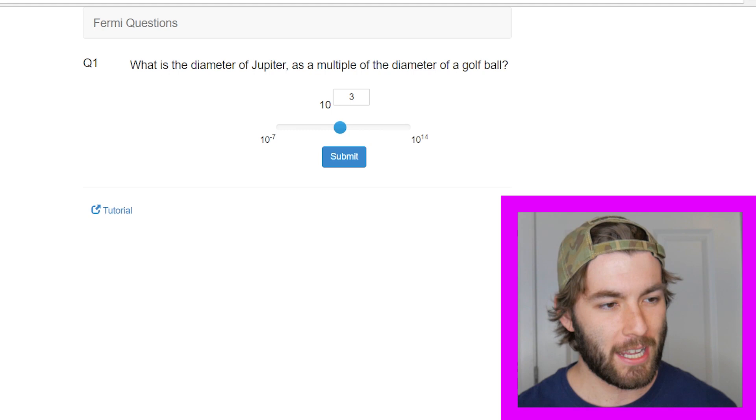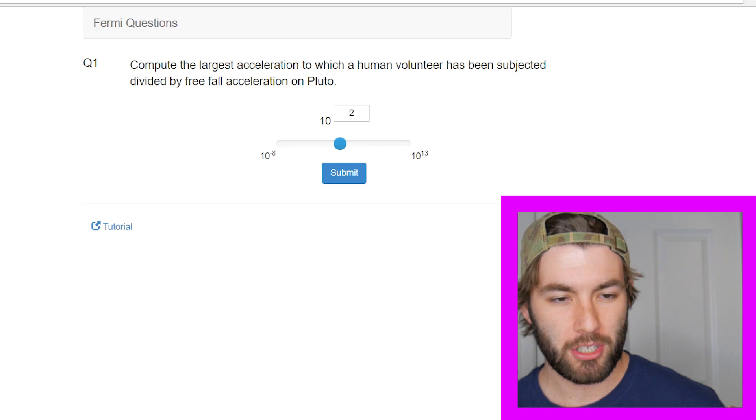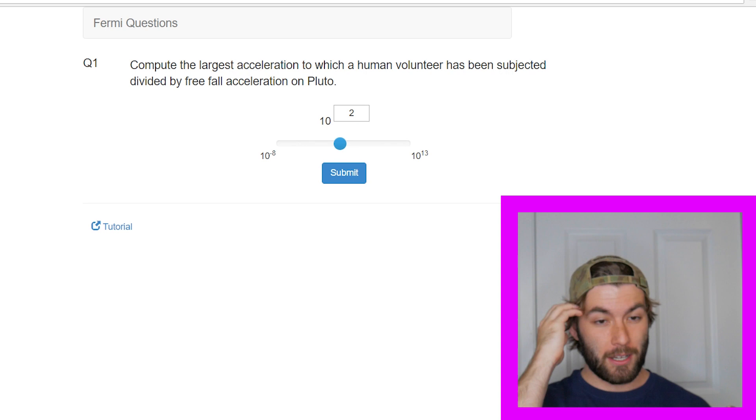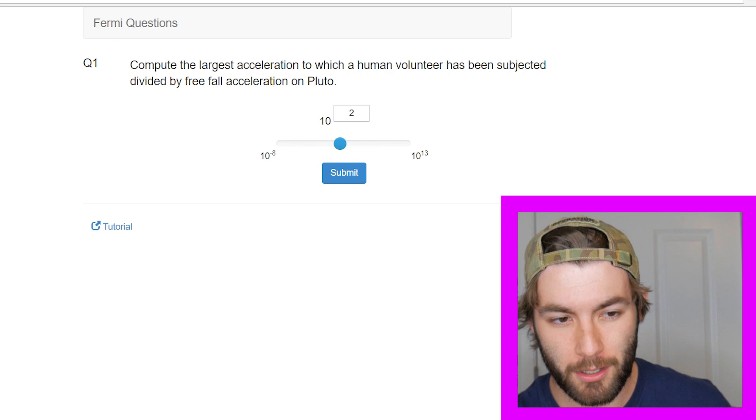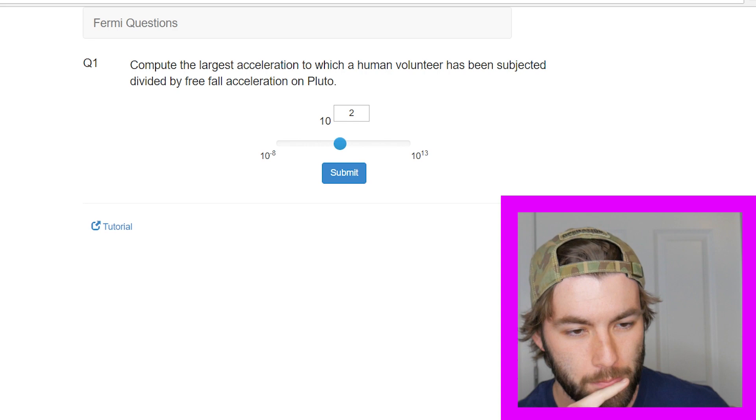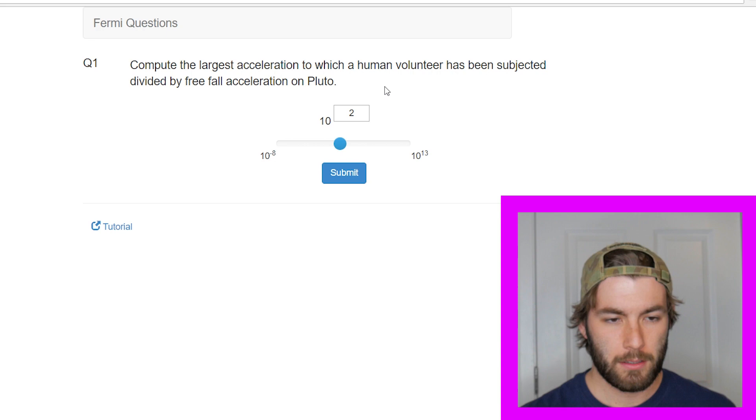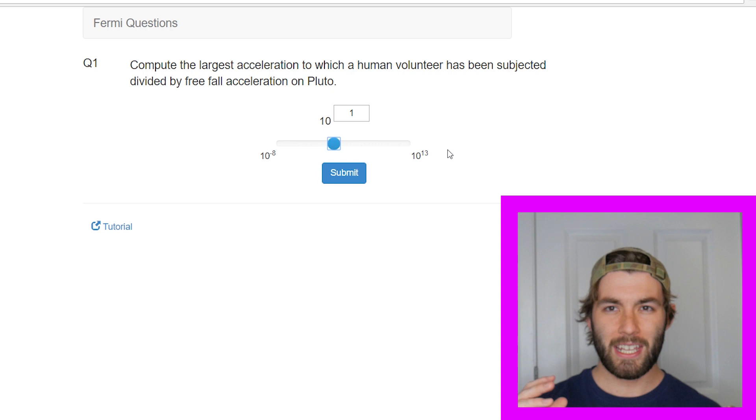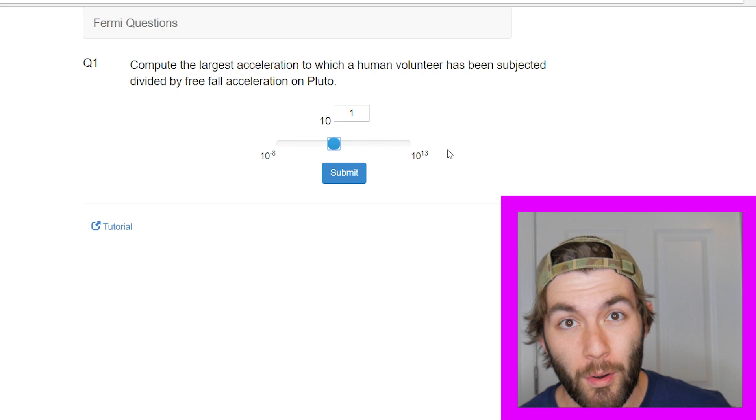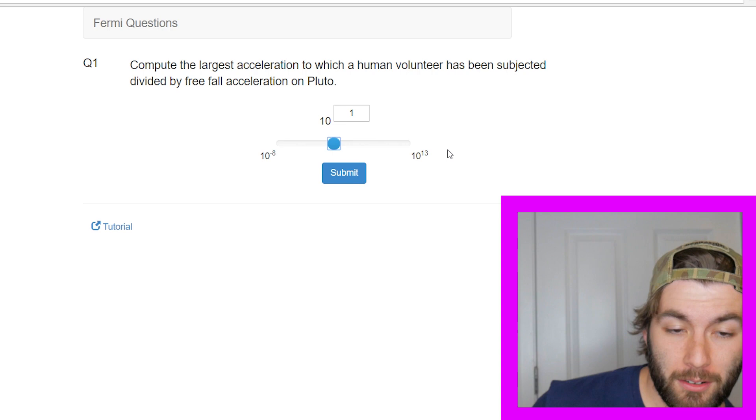Compute the largest acceleration to which a human volunteer has been subjected divided by the free fall acceleration on Pluto. Okay, largest acceleration, I'm assuming that wouldn't be more than like 10 G's that a person's been subject to. I'm not sure but orders of magnitude it's not going to be 100 G's. These people aren't Goku. So 10 G's compared to the free fall acceleration on Pluto. I feel like that would only be like a factor of one or two, right? Maybe it is 10 times less. I'm going to say it's around this ballpark though.